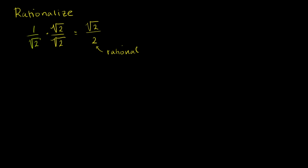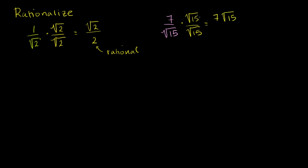Let's do a couple more examples. Let's say I had 7 over the square root of 15. The first thing I'd want to do is just simplify this radical. Square root of 15 — 15 is 3 times 5, and neither of those are perfect squares, so this is about as simple as I'm going to get. So just like we did before, let's multiply this times the square root of 15 over the square root of 15. This is going to be equal to 7 times the square root of 15 in the numerator, over the square root of 15 times the square root of 15, which is 15. So once again, we have rationalized the denominator — this is now a rational number, and we got the irrational number up in the numerator.